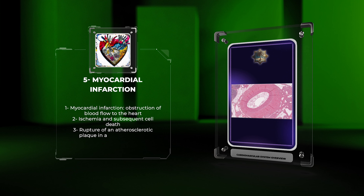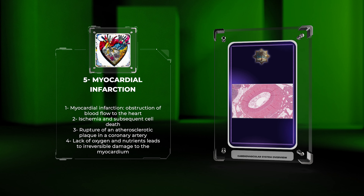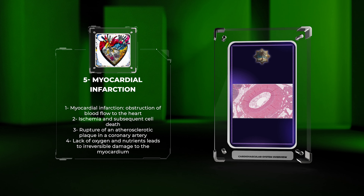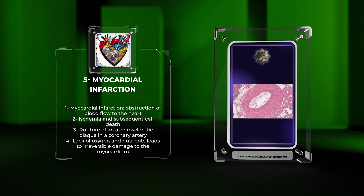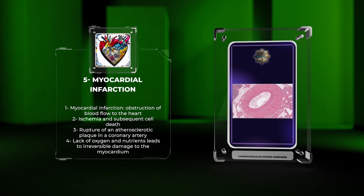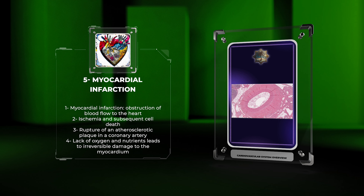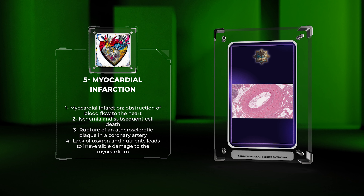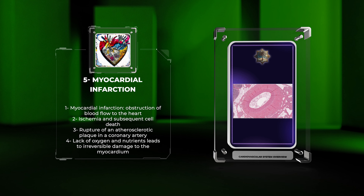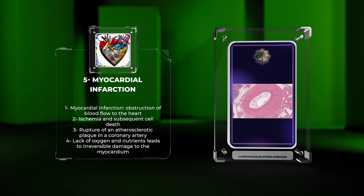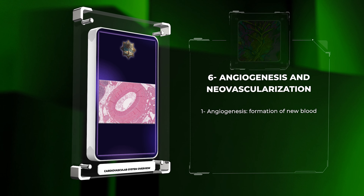Myocardial infarction, also known as a heart attack, occurs when there is an obstruction of blood flow to a part of the heart, leading to ischemia and subsequent cell death. The most common cause is the rupture of an atherosclerotic plaque in a coronary artery, resulting in the formation of a blood clot. The lack of oxygen and nutrients causes irreversible damage to the myocardium, leading to scar formation and potential complications.